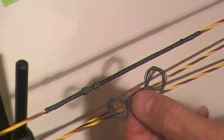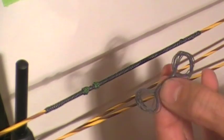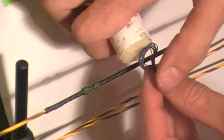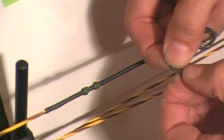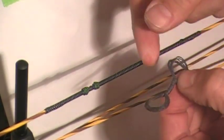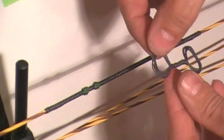To install it on the string, in this version, we're going to install it below the nock set. To begin with, I'm going to put a little bit of bowstring wax on the loose loops and grind that in really well. This is going to help those loose loops stick together a little bit better, make them easier to work with, and it will also help it cinch down on the bowstring a little bit better.